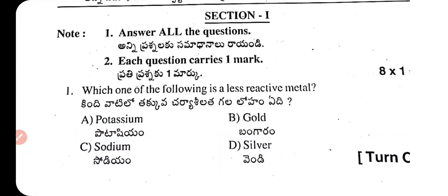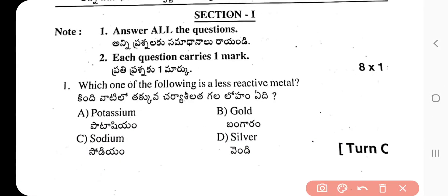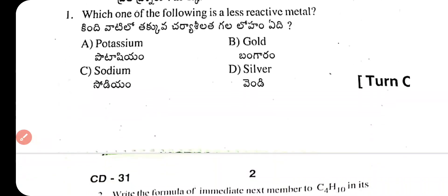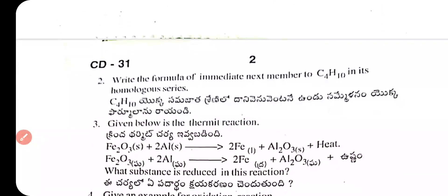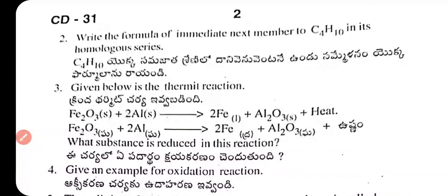Section 1: Answer all questions. Each question carries one mark. Question 1: Which of the following is a less reactive metal — potassium, gold, sodium, or silver? The answer is gold. Gold is a less reactive metal.